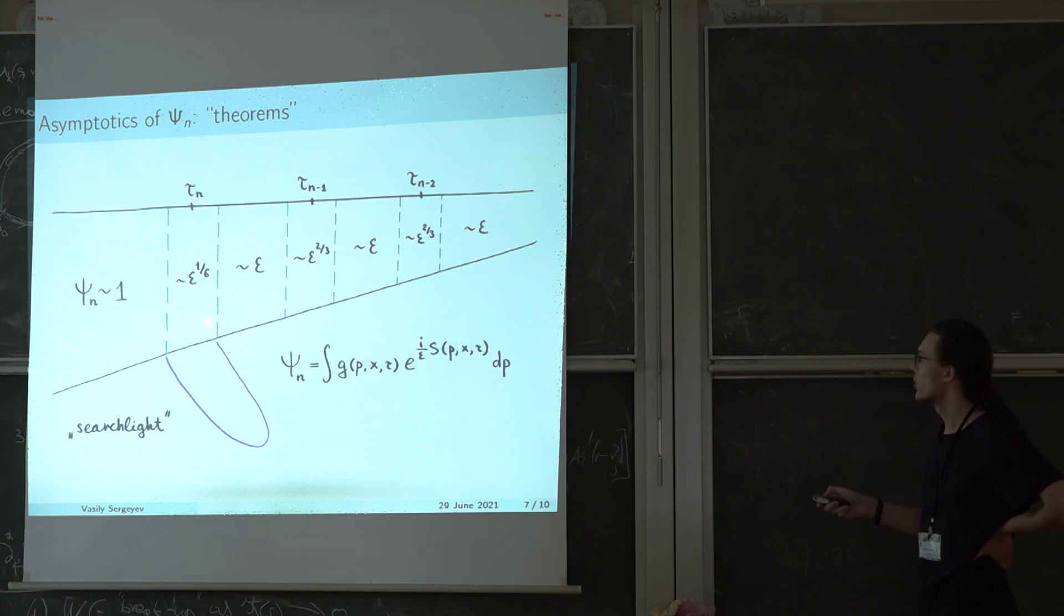Let's go back to the vicinity of the critical moment tau n, when the n-th eigenvalue disappears. But let's now look at the outside of the potential well. It turns out that in the vicinity of this moment, the quantum particle, which was previously localized inside the potential well, becomes delocalized and sort of escapes the potential well.